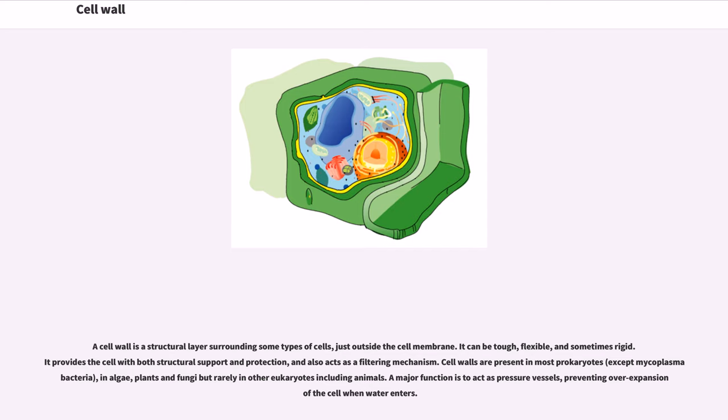Cell wall. A cell wall is a structural layer surrounding some types of cells, just outside the cell membrane. It can be tough, flexible, and sometimes rigid. It provides the cell with both structural support and protection, and also acts as a filtering mechanism. Cell walls are present in most prokaryotes, except mycoplasma bacteria, in algae, plants and fungi but rarely in other eukaryotes including animals. A major function is to act as pressure vessels, preventing overexpansion of the cell when water enters.